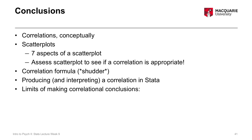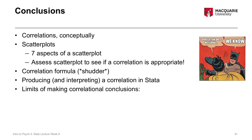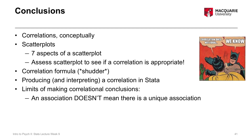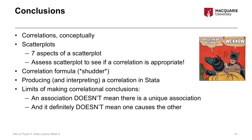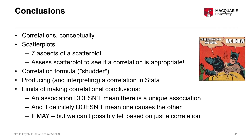We also talked about the limits of making correlational conclusions. Once again, correlation does not equal causation. An association between two things doesn't mean there's a unique association — it doesn't mean one causes the other. It could be a number of different factors causing both things, or just random chance making them appear related. It might be a causal relationship, but we need other elements to be established in order to conclude that one thing causes another.